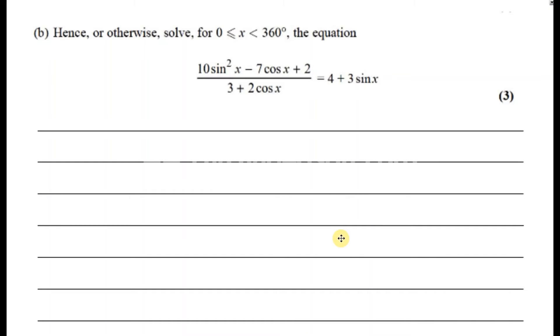Okay, so for part b of this question it says hence or otherwise solve for x between 0 and 360, the equation 10sin²x - 7cosx + 2 over 3 + 2cosx = 4 + 3sinx. Now hence means using what we did in the other page, the result we proved in part a. So basically all I have to do is replace all of this with 4 - 5cosθ. That's using hence, that's the easier way of doing it obviously. So we have 4 - 5cosx = 4 + 3sinx.